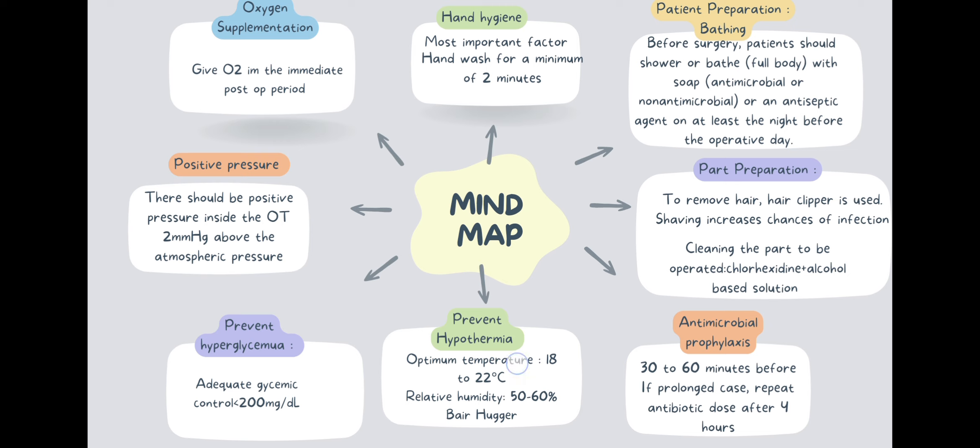Hypothermia has to be prevented. We have to maintain normothermia. For that, we maintain the OT temperature at about 18 to 22 degrees Celsius and relative humidity of 50 to 60 percent. A bear hugger can be used which provides warmth to the patient. It blows warm air over the patient and prevents hypothermia.